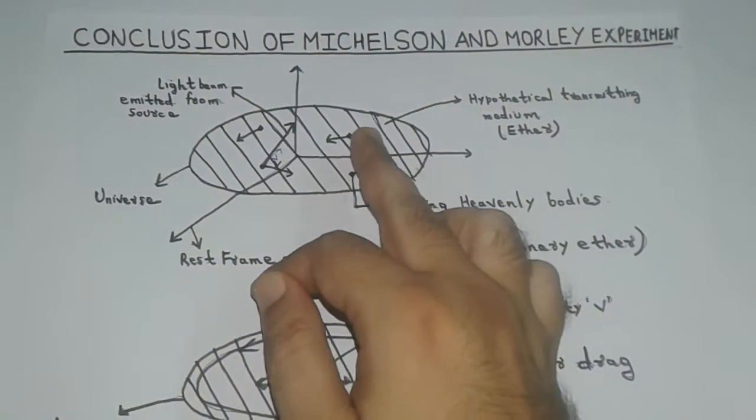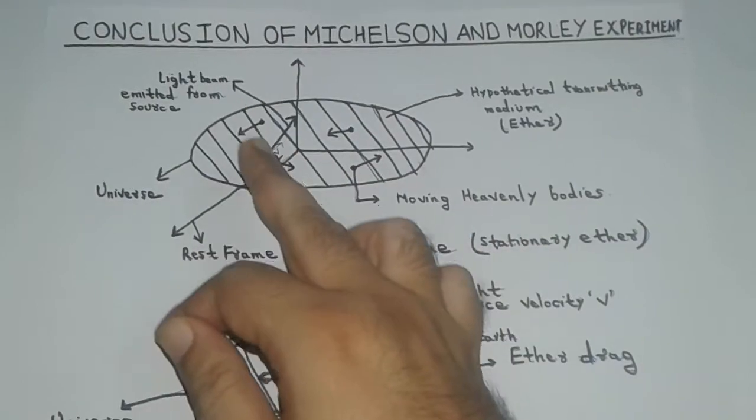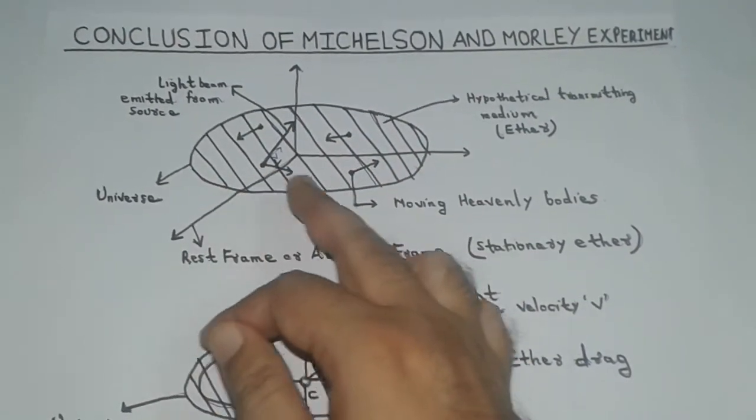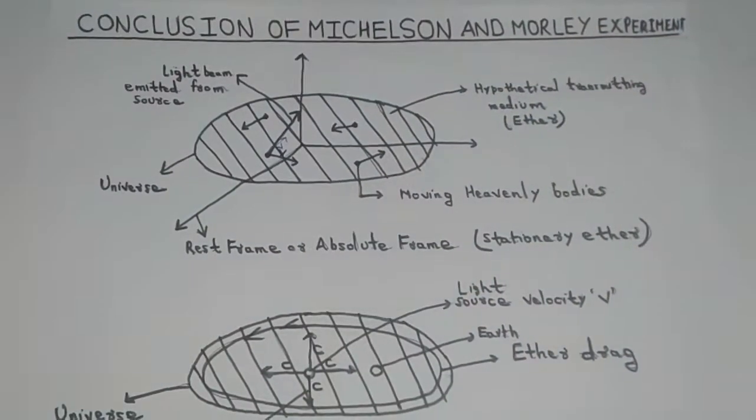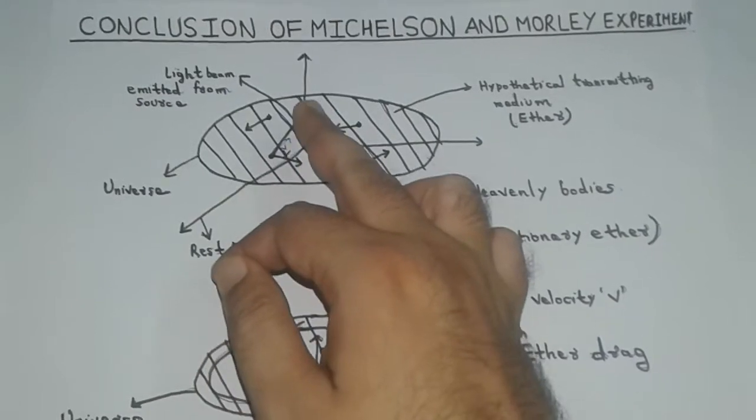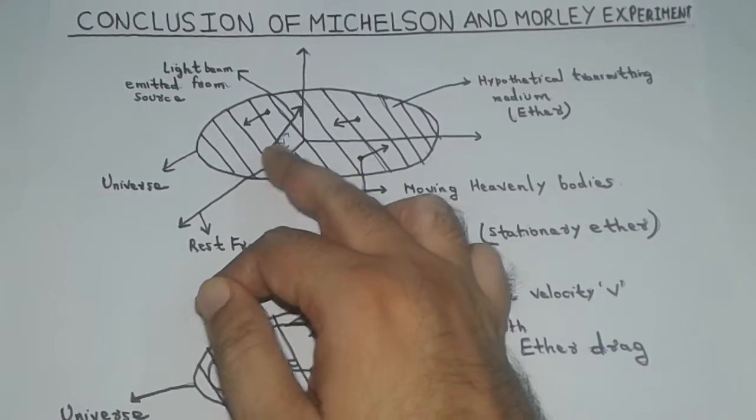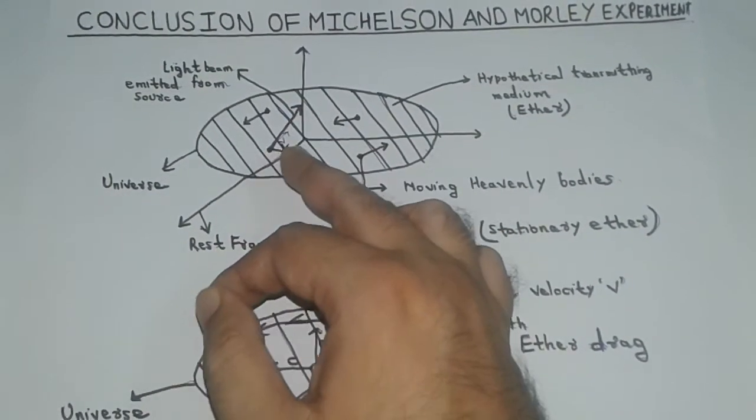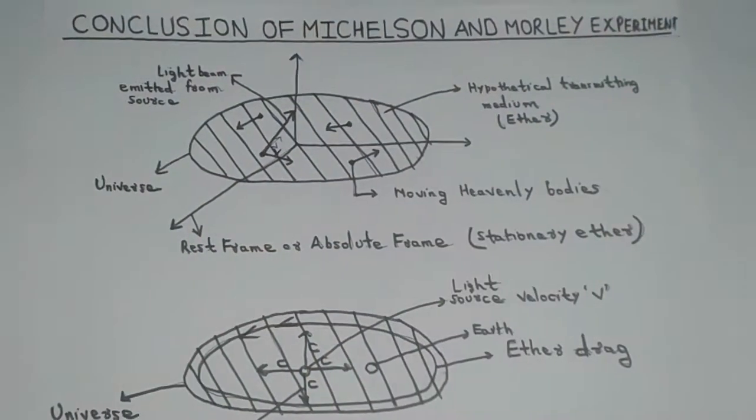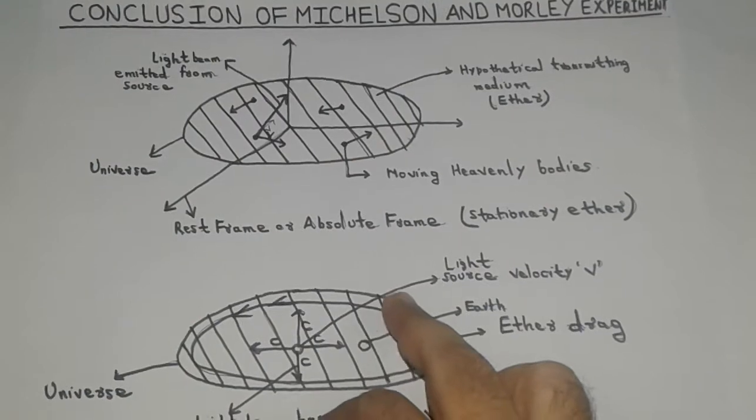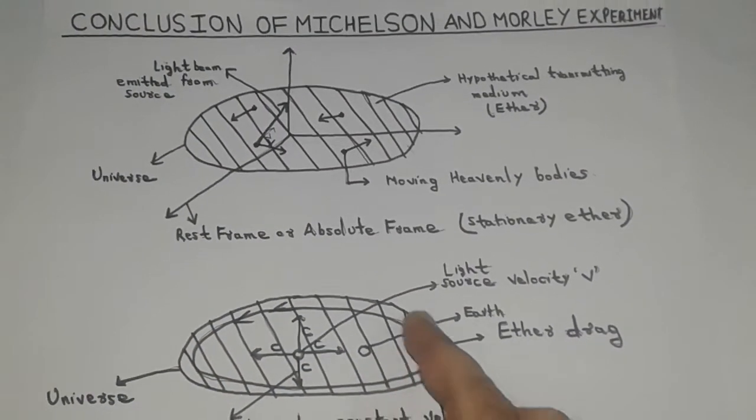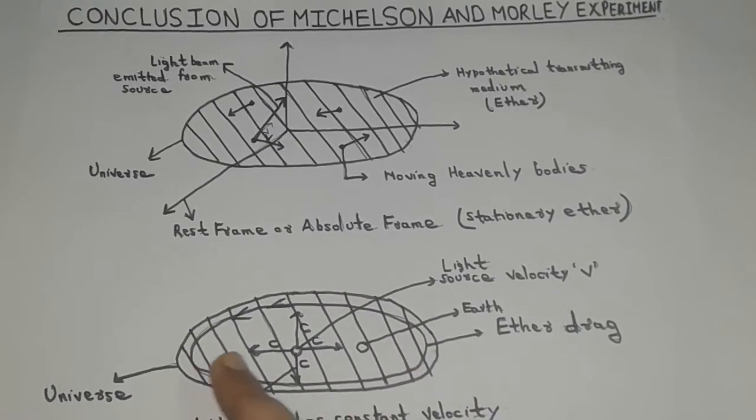In 1887, Michelson and Morley performed an experiment to test the hypothesis of stationary ether. They wanted to know whether the velocity of light can be added with any other velocity. By any other velocity, we mean the velocity of source.